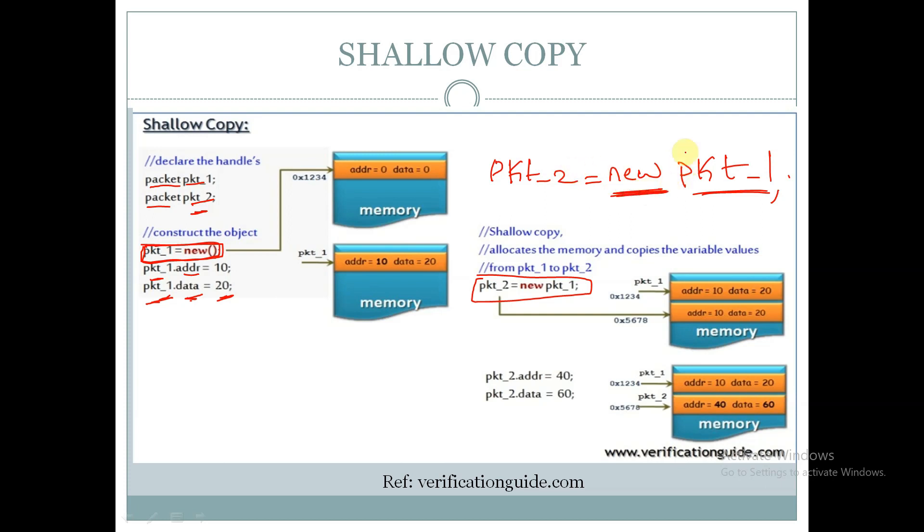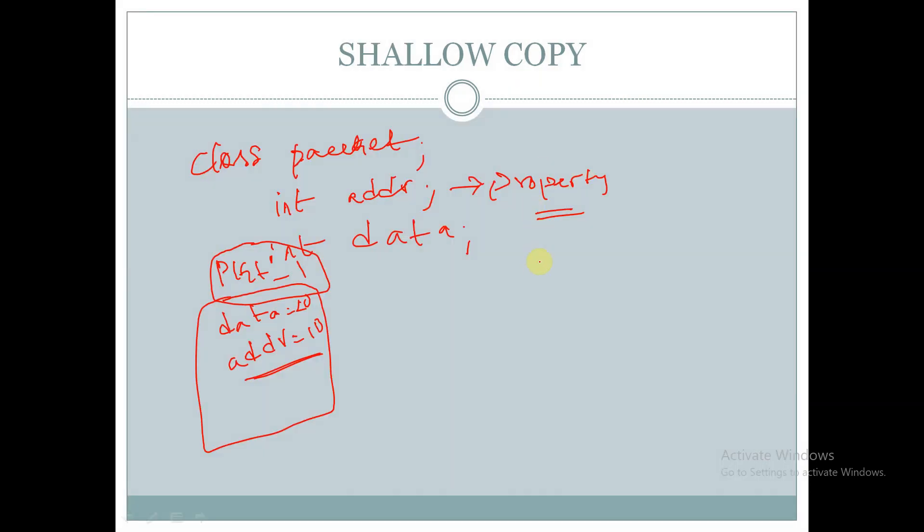So the contents from pkt1 will be copied to pkt2. Before copying of contents, a new memory for the handle pkt2 will be created and the contents from pkt1 will be copied to pkt2. So data and addr are copied from the handle pkt1.